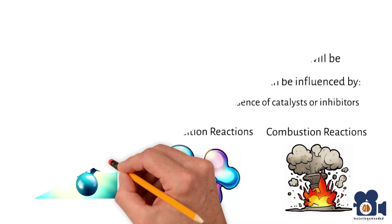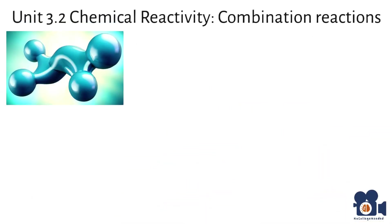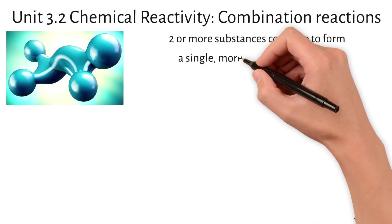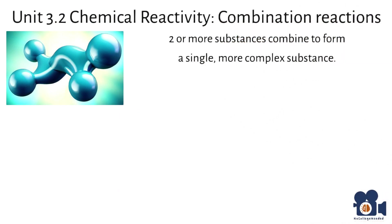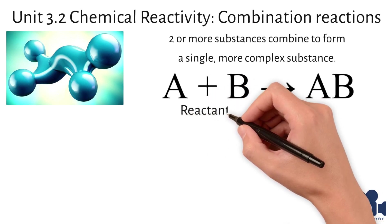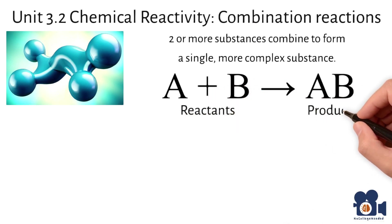Combination reactions are a type of chemical reaction in which two or more substances combine to form a single more complex substance. The general equation for a combination reaction can be represented as follows: A plus B going to AB. In this equation A and B represent the reactants and AB represents the product.